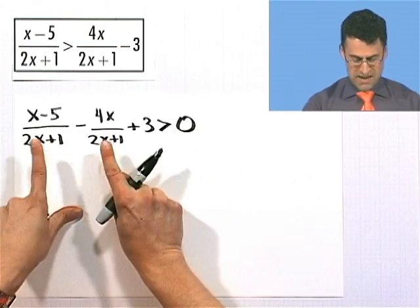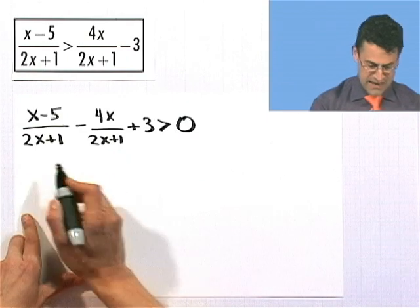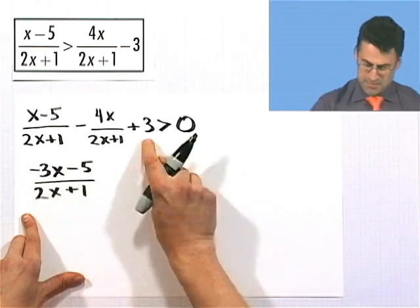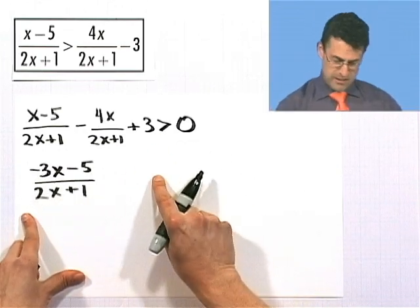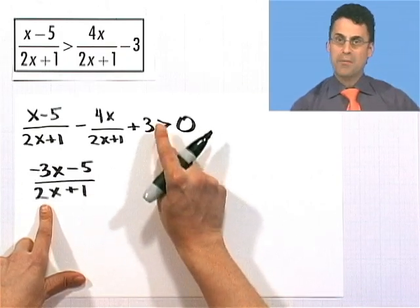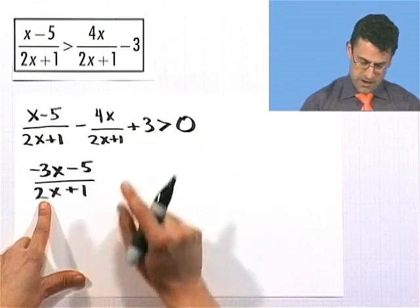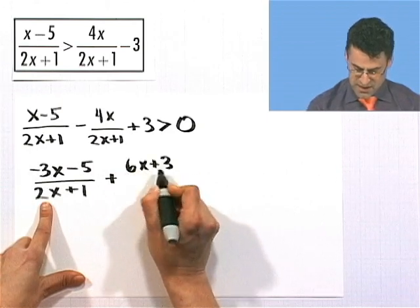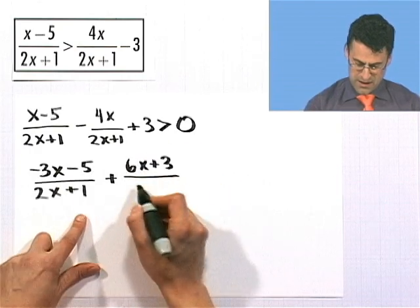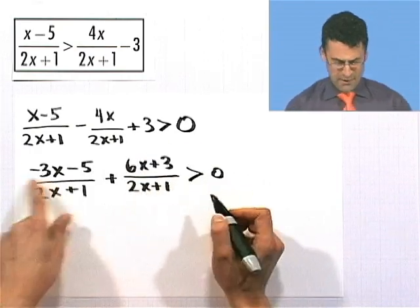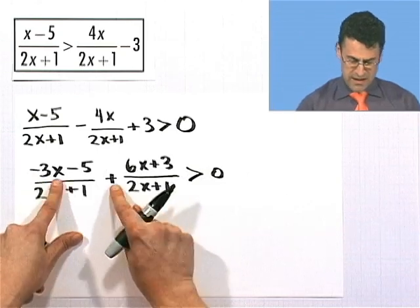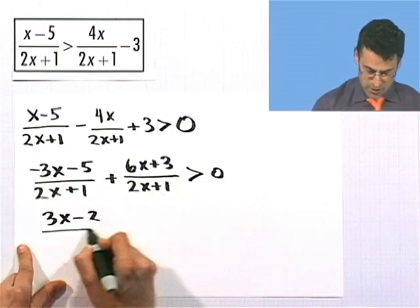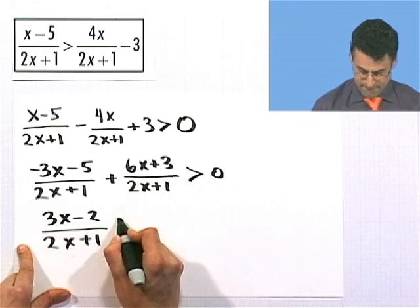Now combine things. The first two fractions already have the same denominator, so x minus 4x gives negative 3x minus 5, all over 2x plus 1. The 3 is over an invisible 1, so I get a common denominator by multiplying by 2x plus 1: 3 times 2x plus 1 gives 6x plus 3, over 2x plus 1. Combining the numerator: negative 3x plus 6x is 3x, and negative 5 plus 3 is negative 2, all divided by the common denominator.